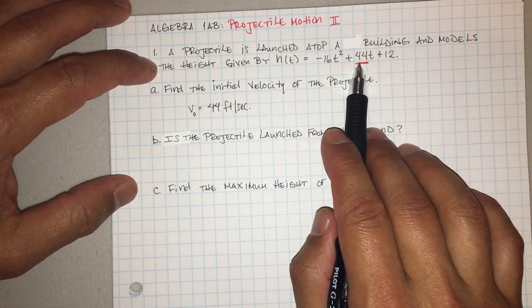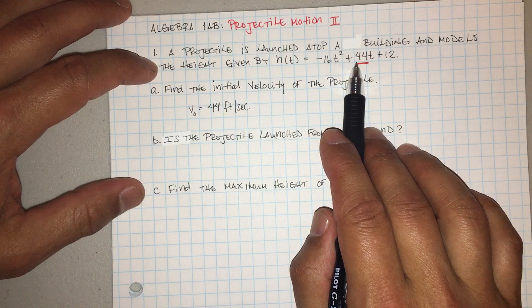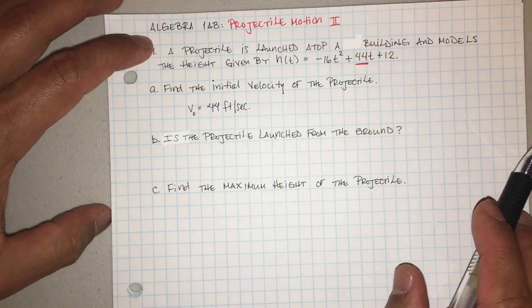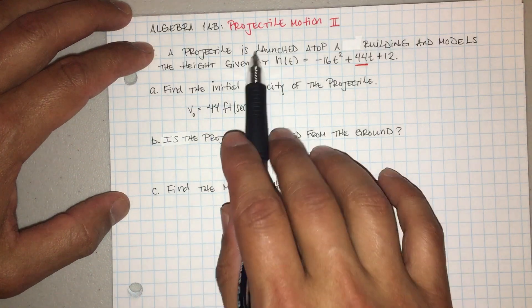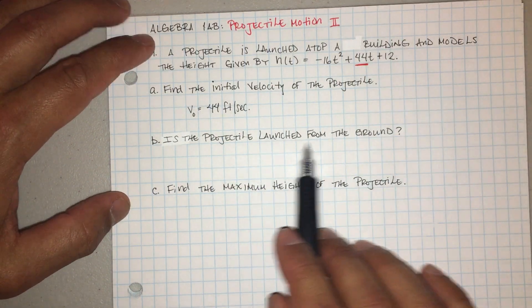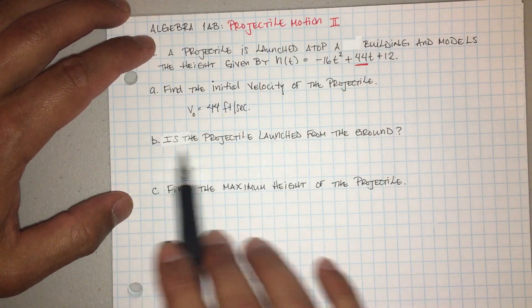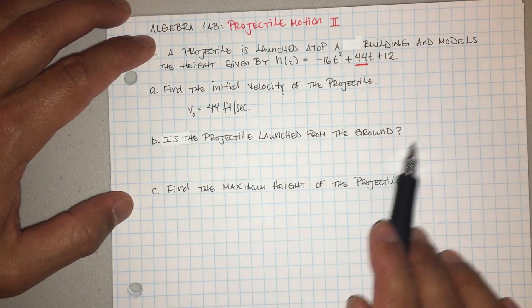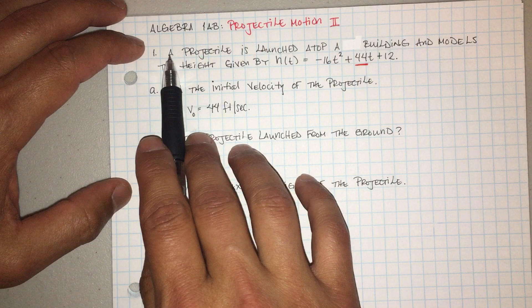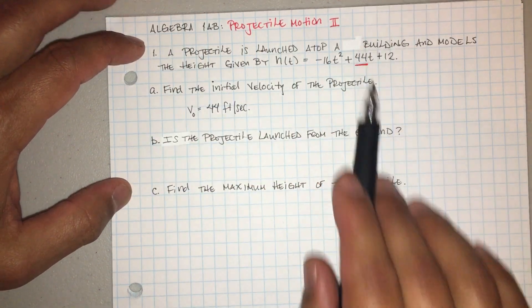Okay, now part B. I kind of just screwed up because it says it's on top of a building, so it's not on the ground. La parte B le pregunté si el proyectil está del piso y claro que no, porque en el comienzo yo dije que estaba arriba de un edificio.